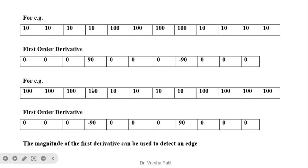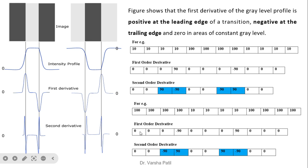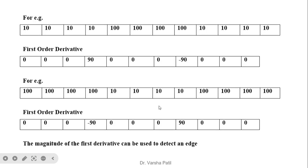For the second image (bright-dark-bright), we get 0 for the constant region, then 10 minus 100 gives minus 90 at the bright-to-dark transition, then 0 for the constant dark region, then 100 minus 10 gives plus 90 at the dark-to-bright transition. The edges are located where peaks appear in the first order derivative. The magnitude of the first derivative can be used to detect the presence of an edge.